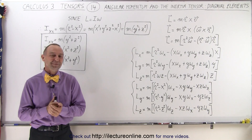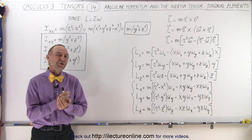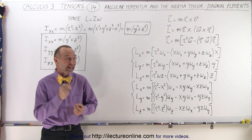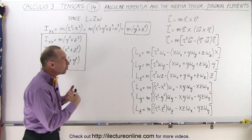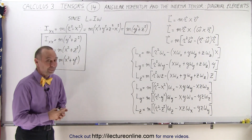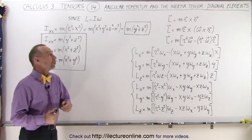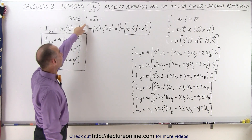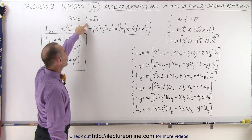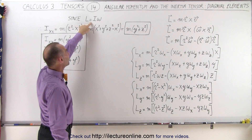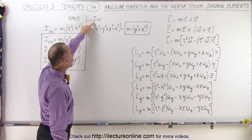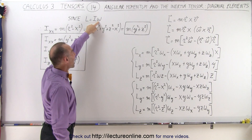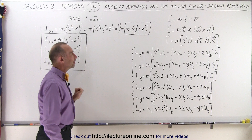Welcome to ElectronLine. In this video we're going to develop the diagonal elements of the inertia tensor. The way we're going to do that is by realizing that the angular momentum is equal to the moment of inertia times the angular velocity.